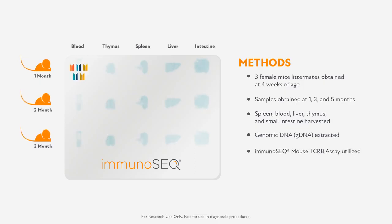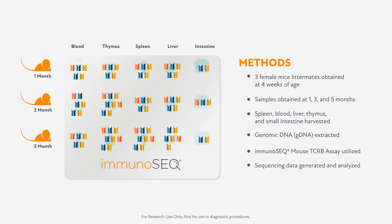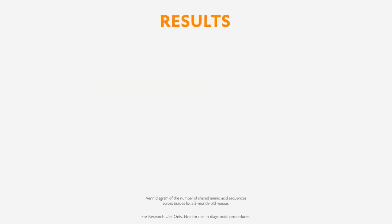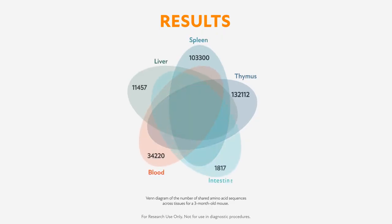Due to the quantitative nature of the assay, samples could be analyzed at the repertoire level and sequence level. Data analyses showed thymus and spleen had the largest repertoires and highest diversity, followed by blood and liver, with the intestine having the smallest repertoire at each age.